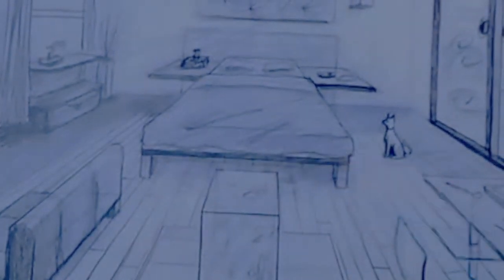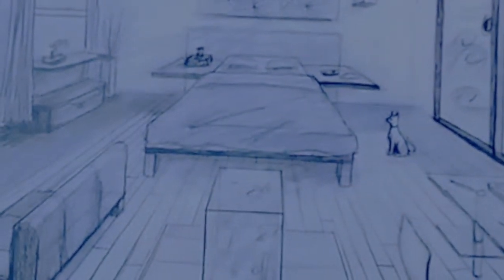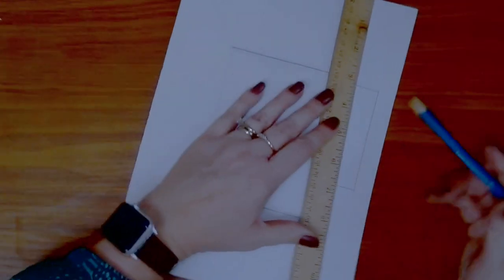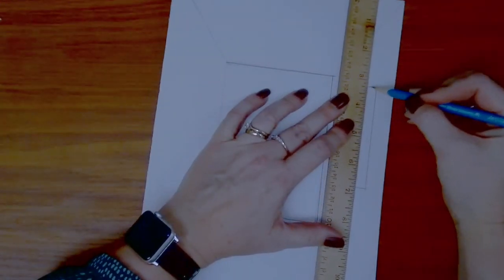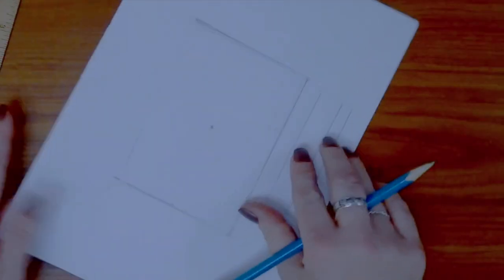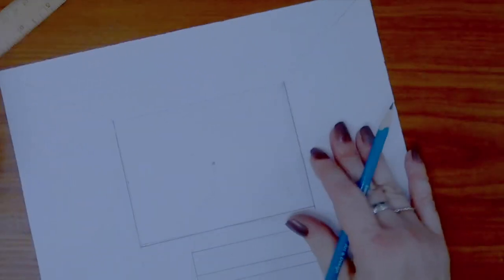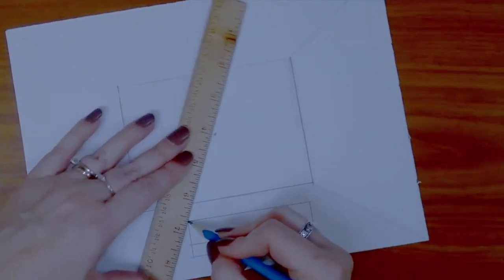I want the foot of the bed to match the foot of this one, so I'm adding another horizontal line to show the bottom of the mattress. Next, I connect the top corners of my rectangle to the vanishing point.